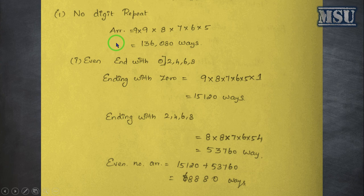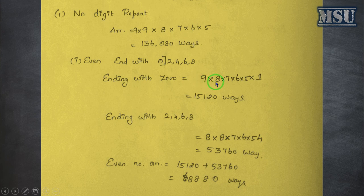Even digits always end with 0, 2, 4, 6, or 8. We will separate the case of 0. If a number is ending with 0, there is only 1 possibility for the last digit. The starting number can be from 1 to 9. Here, you can't have 0 as well as the first digit, so 9 into 8. For the next position, you can't have this number, this number, and this number, so 7. And here, we have 4 possibilities cut out, so this is the value.